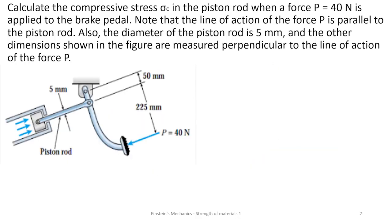We have this problem: calculate the compressive stress in the piston rod when a force P of 40 Newton is applied to the brake paddle. Note, the line of action of the force P is parallel to the piston rod. Also, the diameter of the piston rod is 5 millimeters. The other dimensions shown in the figure are measured perpendicular to the line of action of the force P.